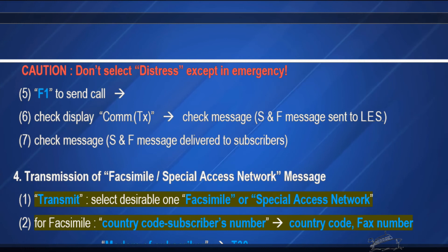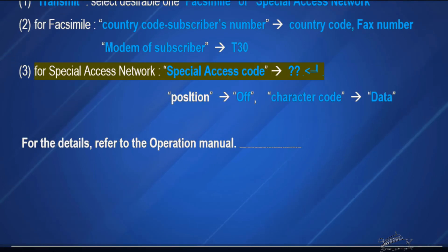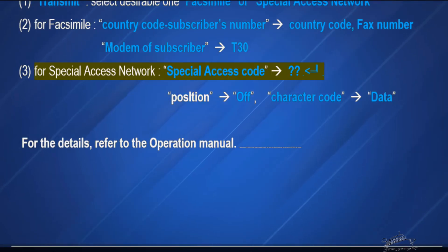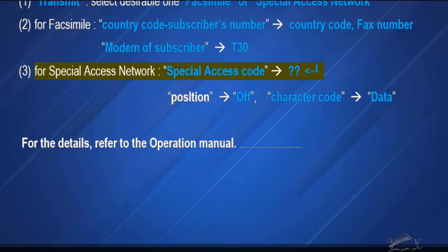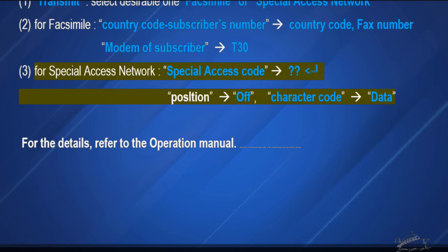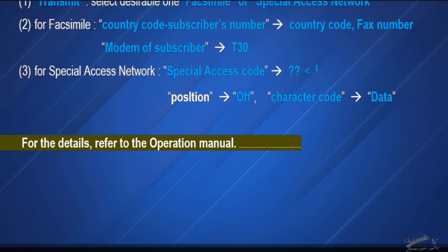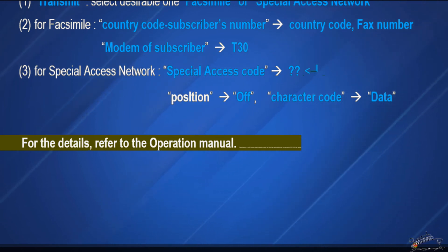For facsimile: enter country code, subscriber number, country code, fax number, modem of subscriber T30. For special access network: enter special access code, then enter. Position: Off. Character code: data. For the details, refer to the operation manual.